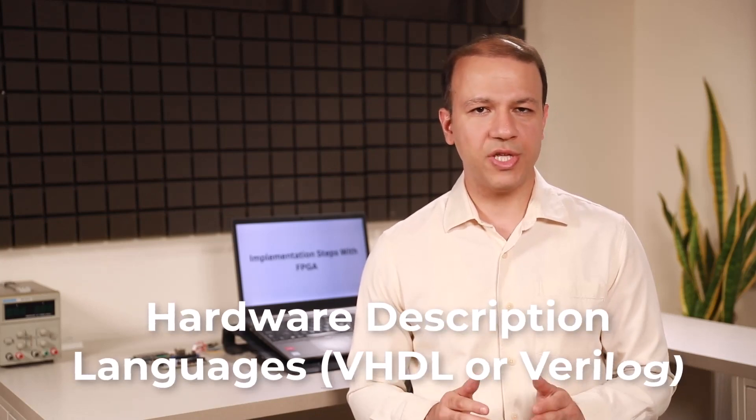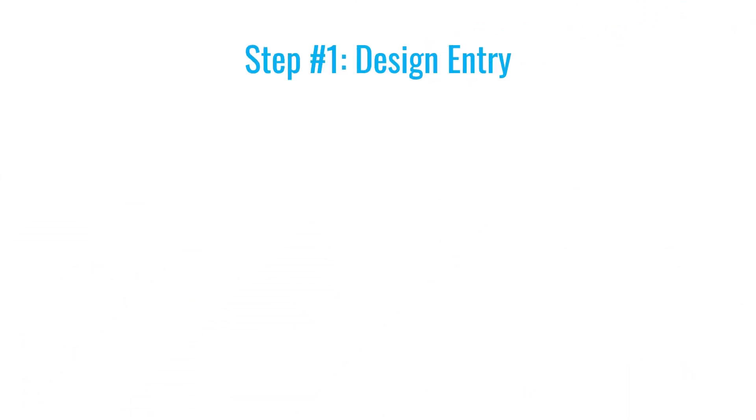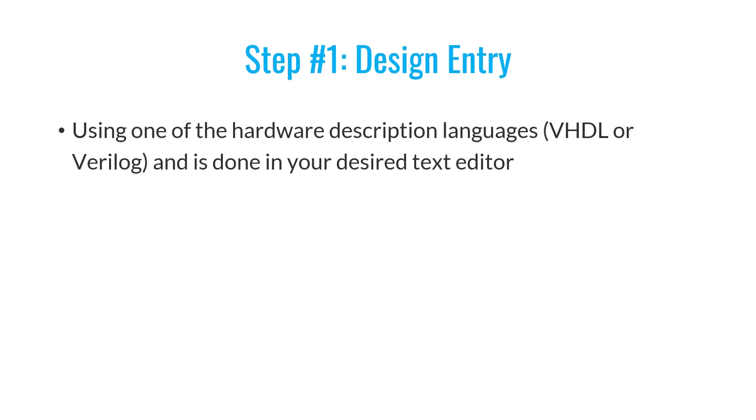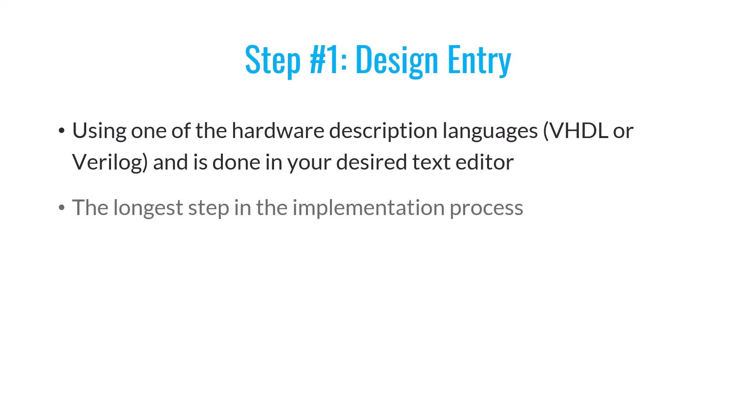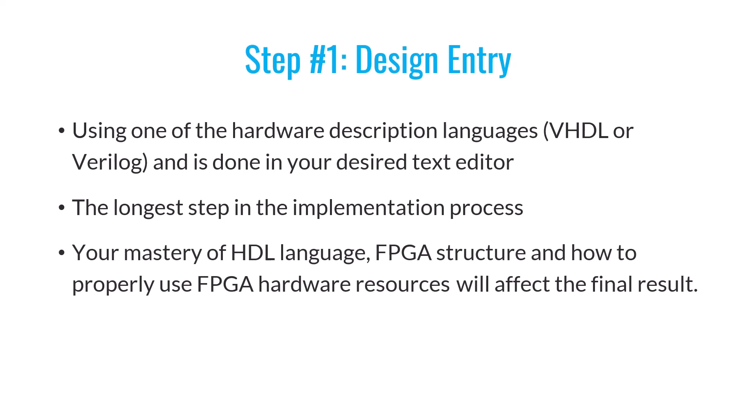By configuring the content of lookup tables and the switch matrices, we can design virtually any type of digital circuits. We use hardware description languages or HDLs like VHDL or Verilog to describe our digital design in an implementation software for the FPGA. The first step in implementing a digital design is called design entry, which involves writing our desired digital design using an HDL such as VHDL or Verilog in a text editor. The choice of text editor isn't critical — you can use the one you're most comfortable with.